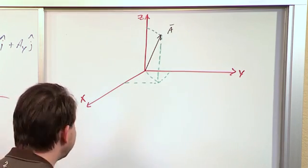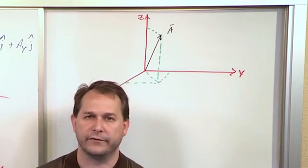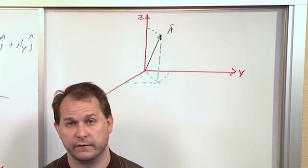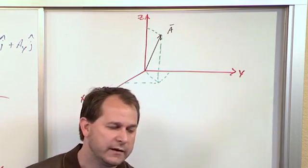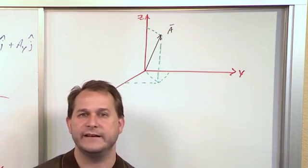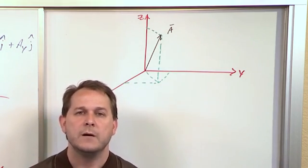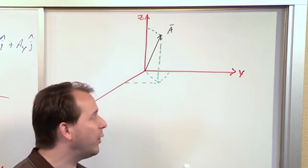All right, now what we're saying is this vector, this vector A, let's say it's a force. It has a magnitude, 50 newtons, and it's pointing in some direction. We can define the direction now that we know what the direction cosines are, the angle, the direction angles. We can specify theta X, theta Y, theta Z. We talked about that in the last section. But let's say, what if we wanted to create a unit vector pointed in...